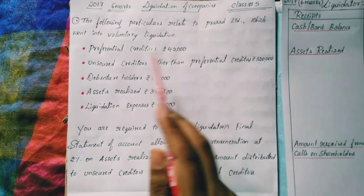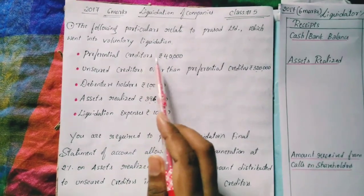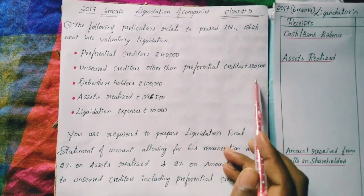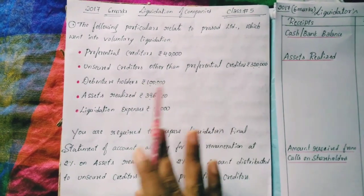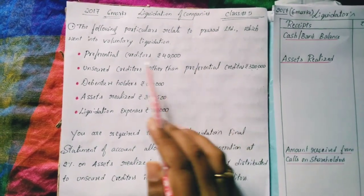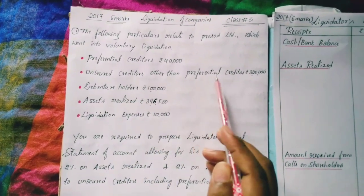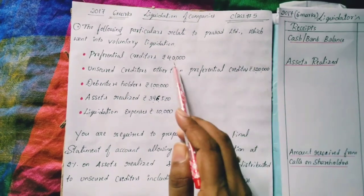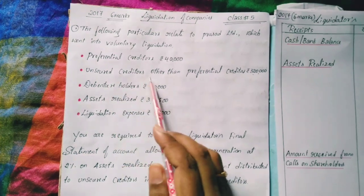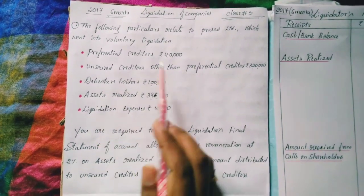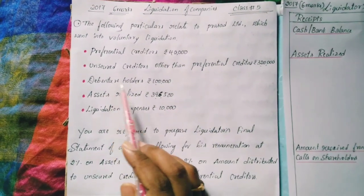The given data: preferential creditors Rs.40,000; unsecured creditors other than preferential creditors Rs.3,20,000. So unsecured creditors excluding preferential creditors is Rs.3,20,000, and preferential creditors is Rs.40,000. Next, debenture holders Rs.1,00,000.